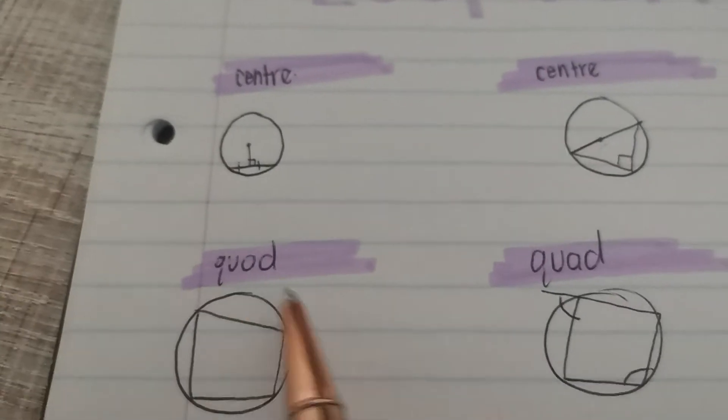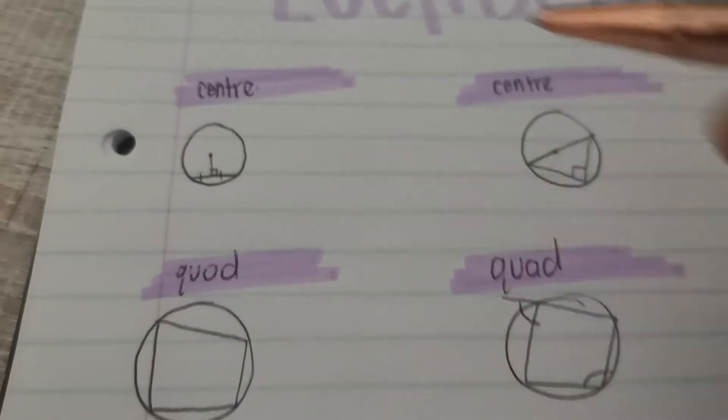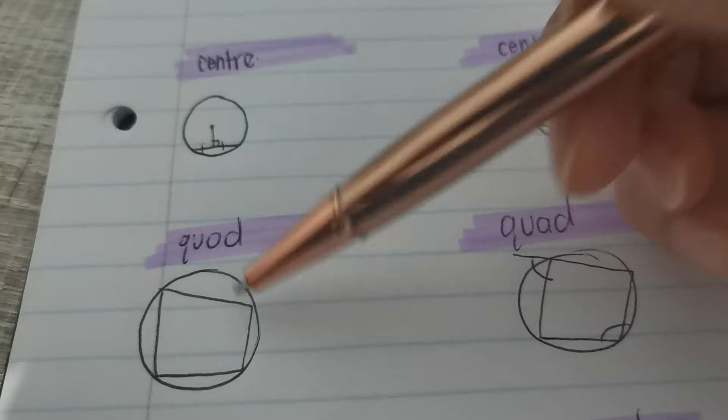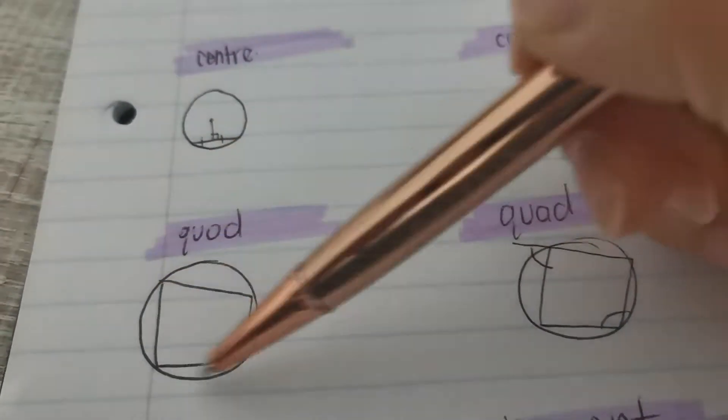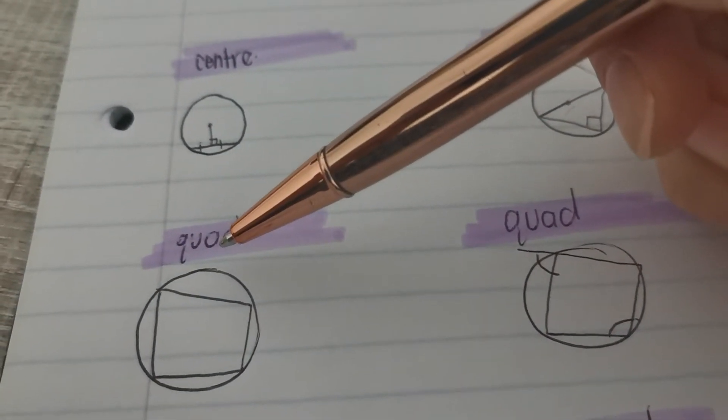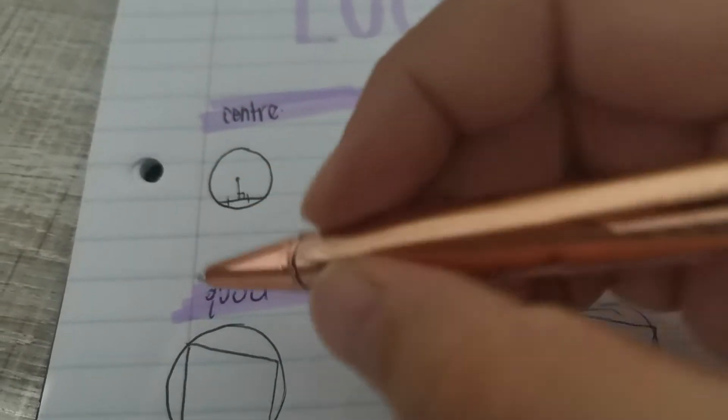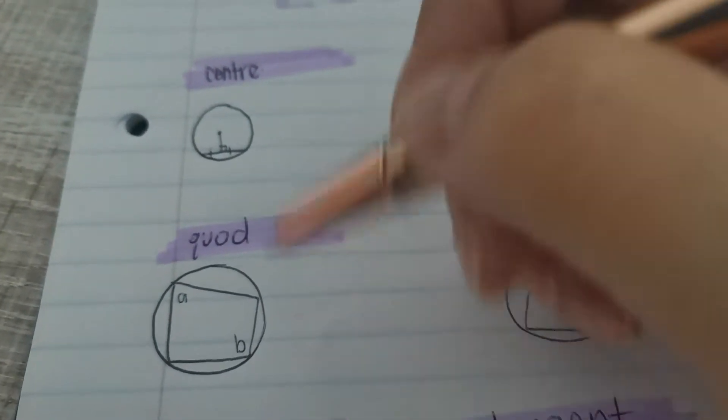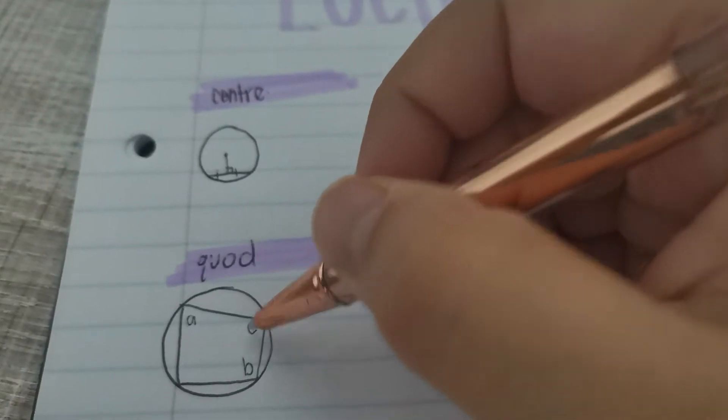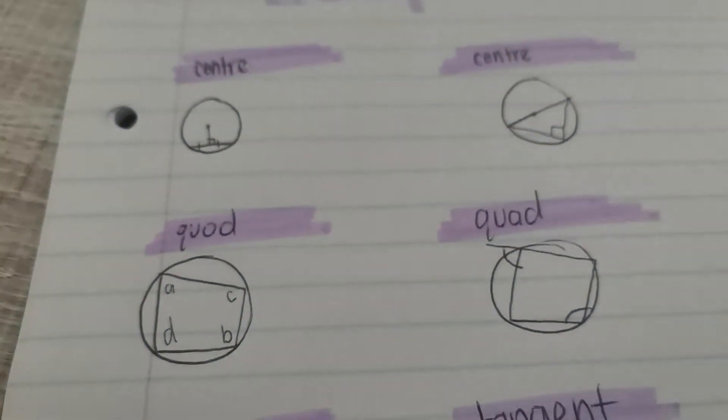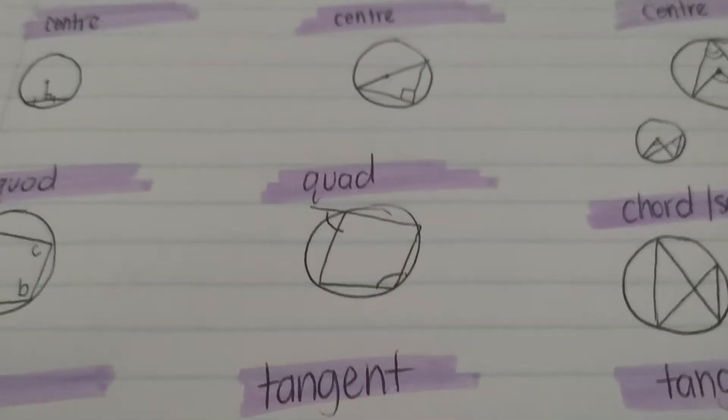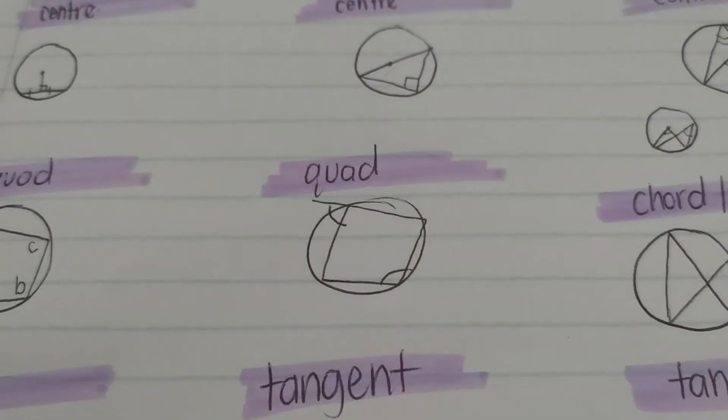Then we move on to the one with quads. For quads, we know that if it's a cyclic quad, what makes something a cyclic quad, all four of its vertices are touching the circumference of the circle. If that's the case, this angle plus this angle adds up to 180 degrees. And the same thing here, this angle and this angle add up to 180 degrees. We say they are supplementary.